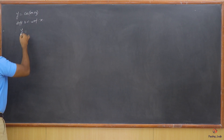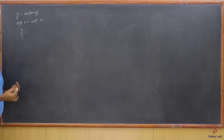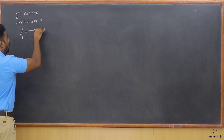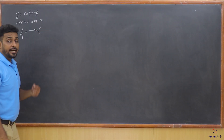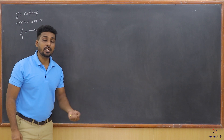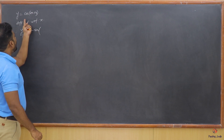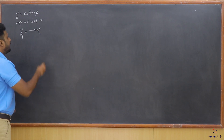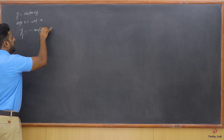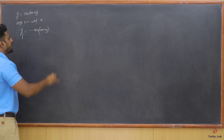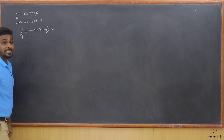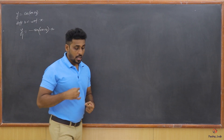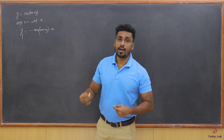So I get y1. What is the derivative of cos? The derivative of cos is minus sine. It is not cos(x), it is cos(ax + b), so I write minus sine(ax + b) into the derivative of (ax + b), which is a.